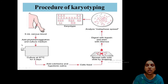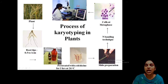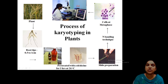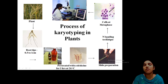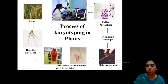For karyotyping in plants, the same principle applies. Root tips are commonly used. You take the root tip, fix it, pre-treat with colchicine when the cells are in metaphase, then prepare a slide. In plants, banding techniques are often not needed — you can observe cells directly at metaphase stage, take photographs under a microscope, and do the karyotype.